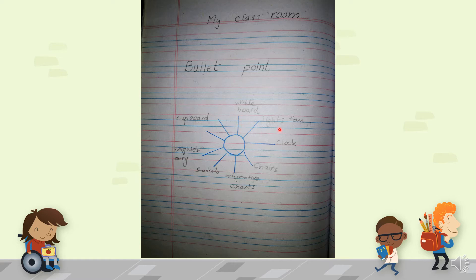The bullet points for the classroom include: lights, fan, clock, chairs, informative charts, students, bright area, and cupboard. You can write this page.